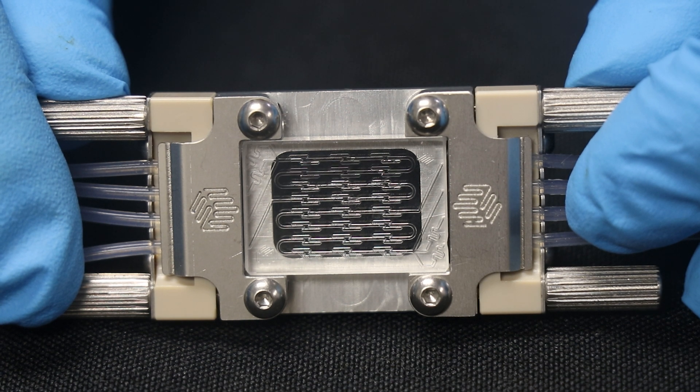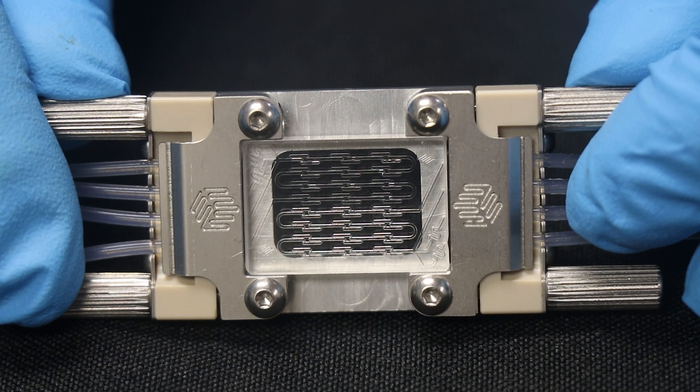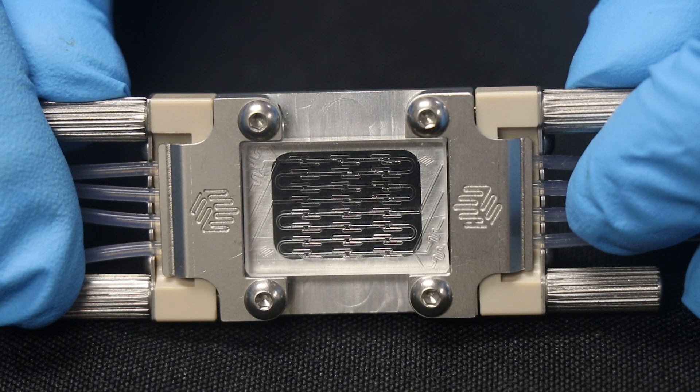We are using a glass micromixer chip with herringbone design. This chip is designed to have two separate flow paths. As you can see, only the top flow path is being utilized here.